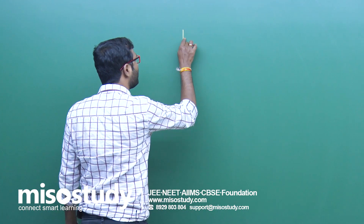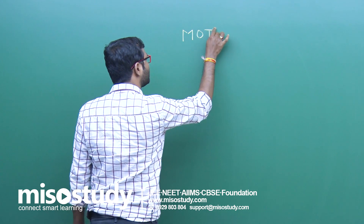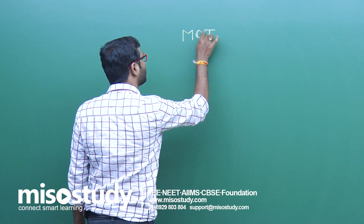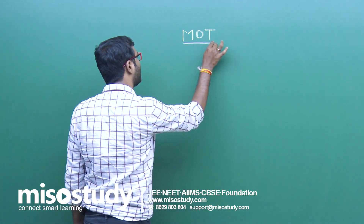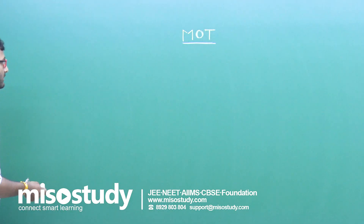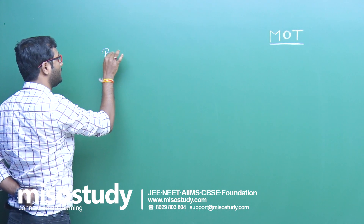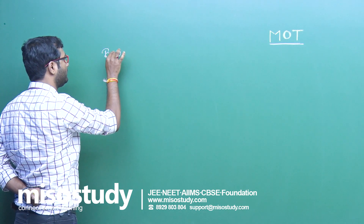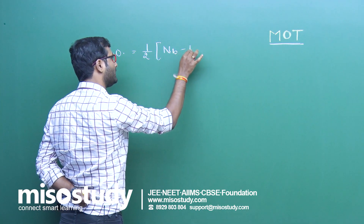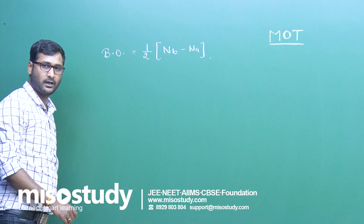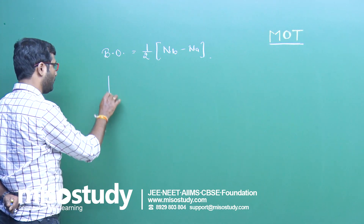Today I am going to discuss MOT — Molecular Orbital Theory. This theory helps to find the bond order of a molecule or ion. Bond order will be equal to 1/2 × (NB − NA), where NB is the number of bonding electrons and NA is the number of anti-bonding electrons. Now I am giving you a technique to find the bond order in quick time.